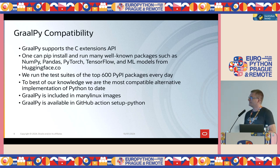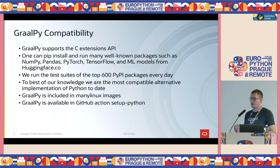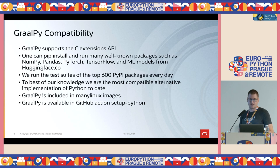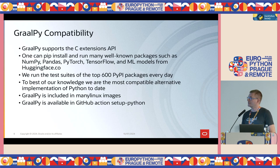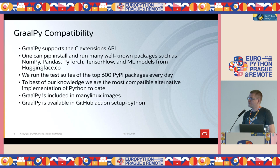GraalPy supports the C extensions API, so you can pip install many well-known packages such as NumPy, Pandas, and machine learning models from HuggingFace. We ourselves run the test suites of the top 600 Python Package Index packages every day, monitoring the tests and fixing incompatibilities. It's not that all 600 packages pass 100%, but we have quite a good rate. To the best of our knowledge, we believe we are the most compatible alternative Python to date.